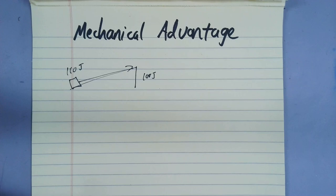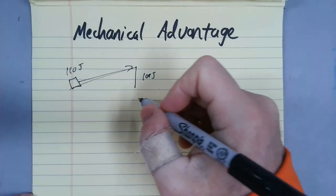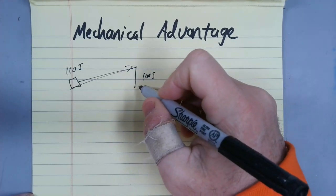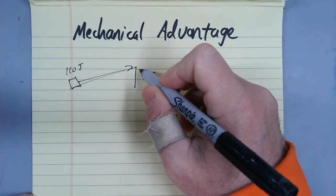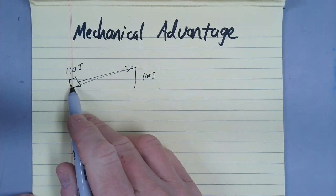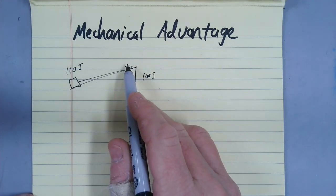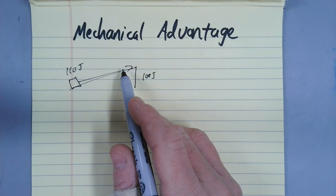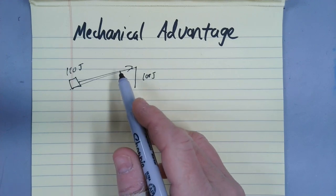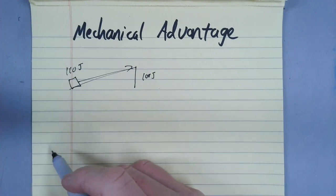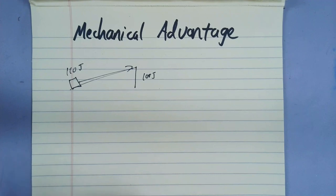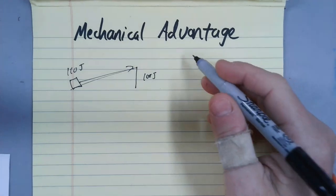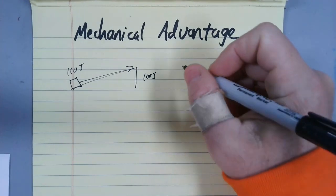Well, a machine, a ramp can help you by reducing the amount of force that it takes for you to complete the job. Say if this were a really heavy box and you could not provide the force to lift it straight up. Using a ramp allowed you to do the same job, but with using less force. That's an advantage. This machine, this ramp gave you an advantage. It helped you to do work. And that's what mechanical advantage is.